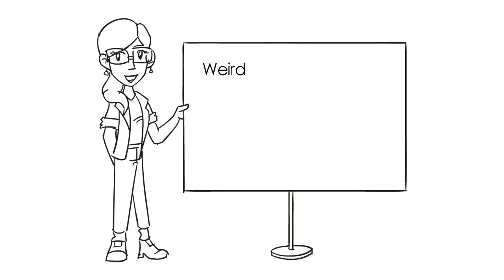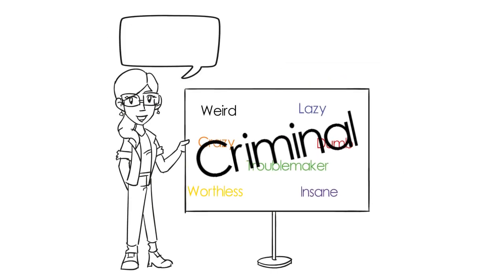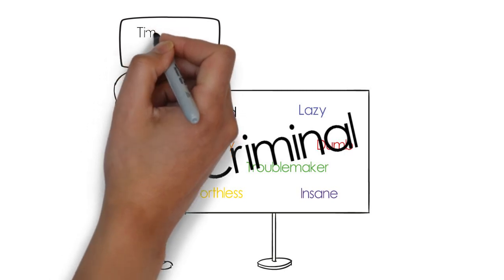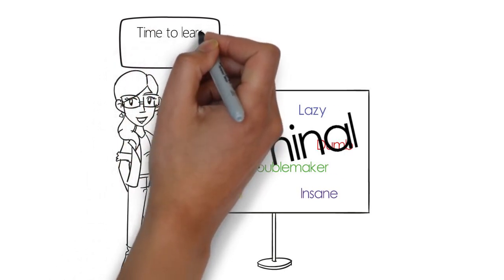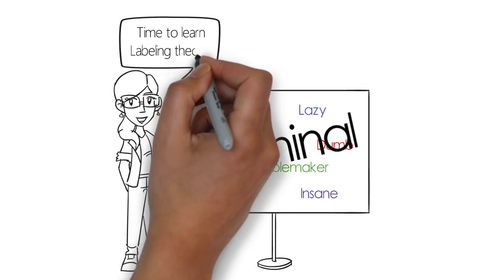Labels. We give people a number of labels based on who we think they are, which is based on what society tells us is important. The labels we give to a person determine how we interact with them. This includes what we believe is deviant and criminal.